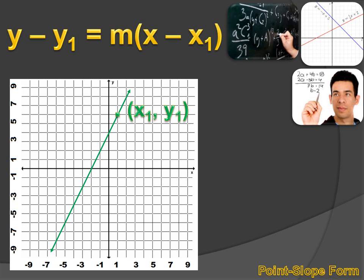Point-slope form: Y minus Y1 equals M times X minus X1. What do all those Xs and Ys and Y1s and Ms mean? Well, Y is just a generic variable — an unknown Y, any Y. Y1 is a specific Y; I'm going to pick a point on the line and it's going to have coordinates X1 and Y1, and Y1 is the Y value of that point. M is the slope of the line. X is just a generic variable — an unknown X. But X1 is a known X; it's the X value of the point we chose on our line.